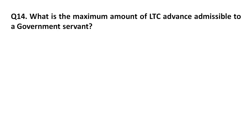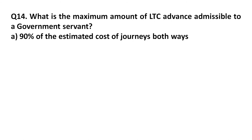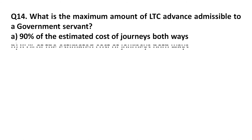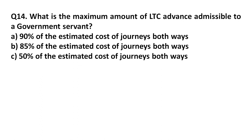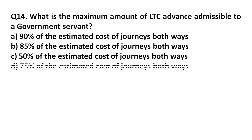Question 14: What is the maximum amount of LTC advance admissible to a government servant? Option A: 90 percent of the estimated cost of journeys both ways. Option B: 75 percent of the estimated cost of journeys both ways. Option C: 85 percent of the estimated cost of journeys both ways. Option D: 75 percent of the estimated cost of journeys both ways.